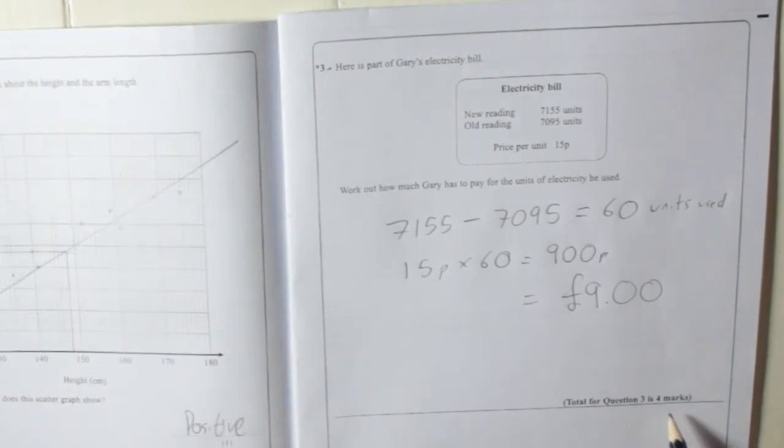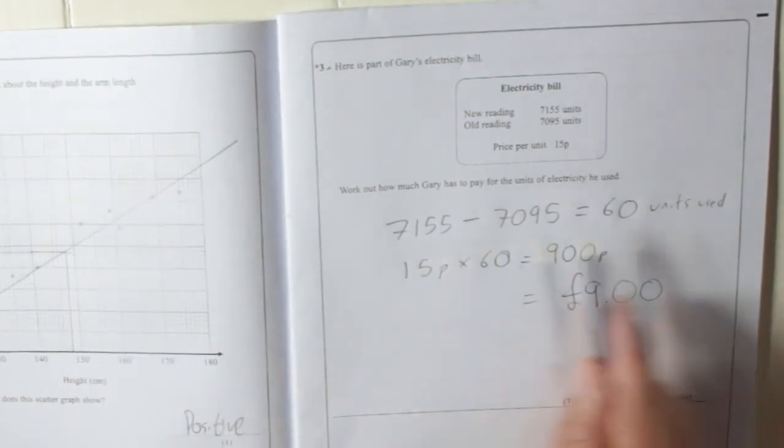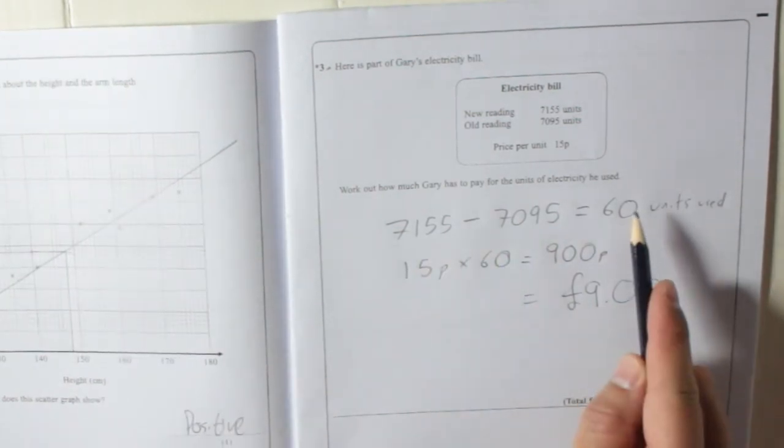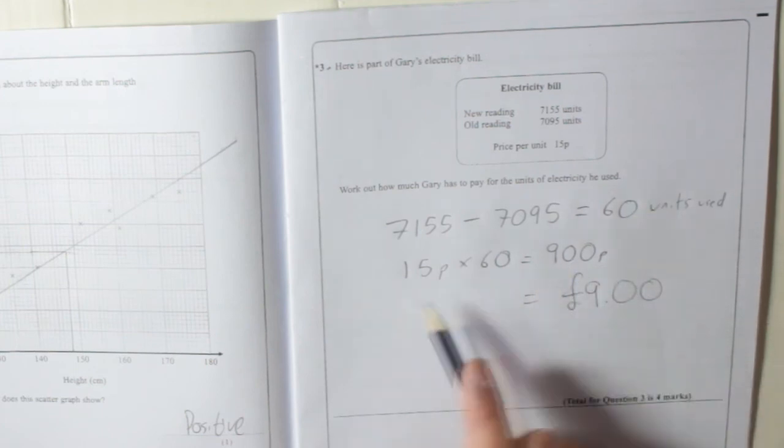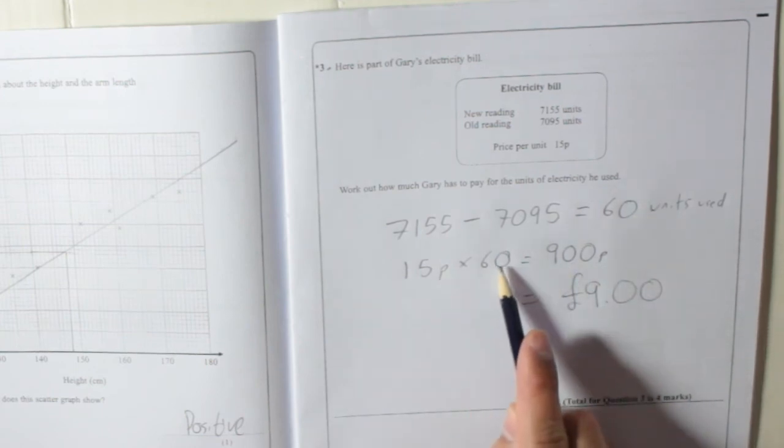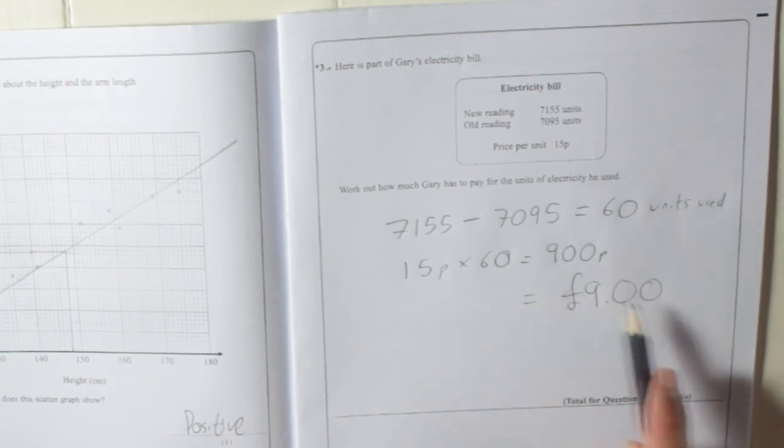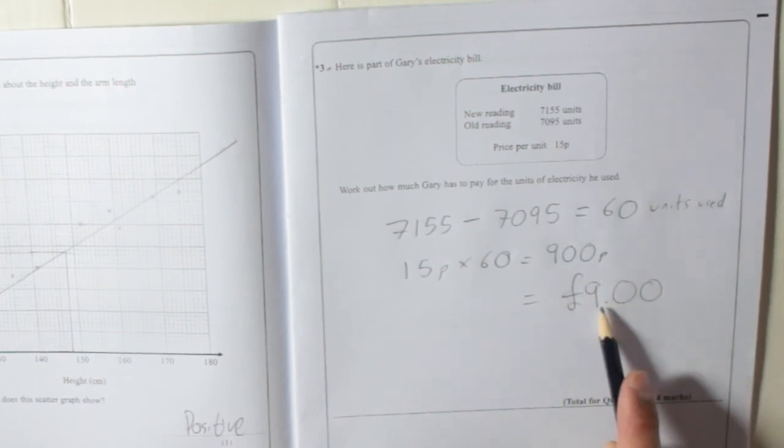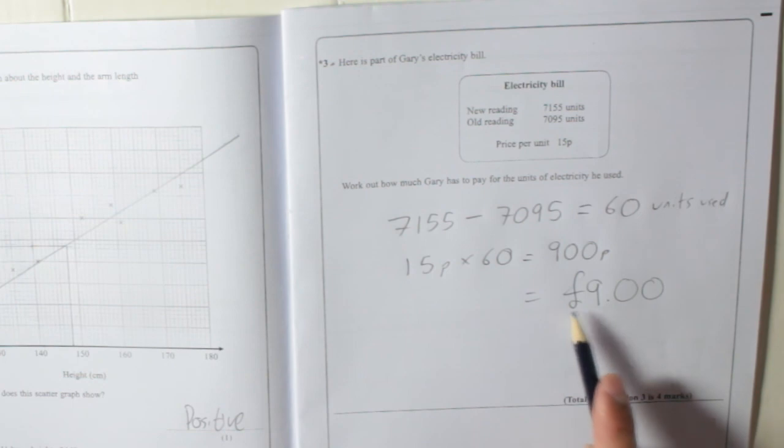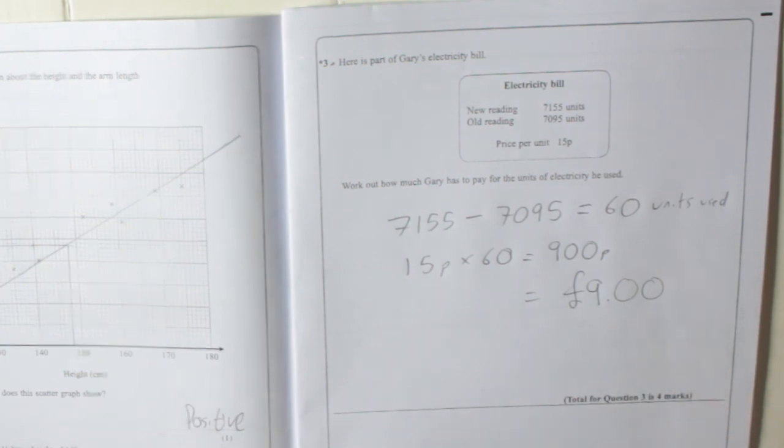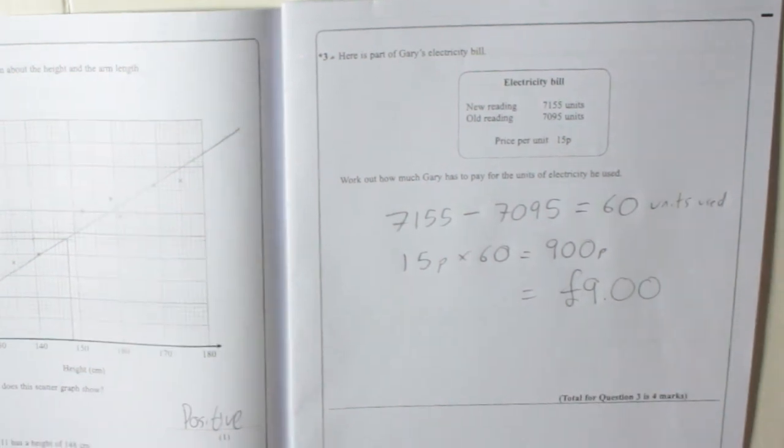And if you're wondering why you get 4 marks, well, there's a bit of working out there. You get 60 units, you want to get 15p times 60, and then you get your marks. The other 2 marks by doing 9, so having an answer in pounds and writing units. So very easy 4 marks there. Okay.